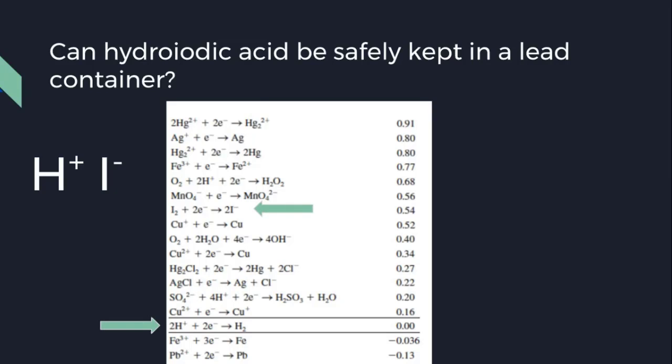Next, we find lead, which is down here. Now we can draw arrows. Notice how lead and iodine are on the same side. This means that no reaction will occur.